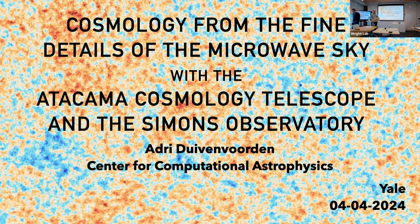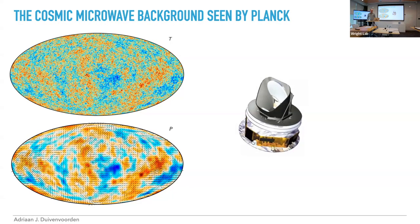I'll give an overview of what the Atacama Cosmology Telescope and the Simons Observatory are looking at, by starting with some context on the cosmic microwave background field. Here you see the data from the Planck satellite, which is really where most of our current knowledge about cosmology comes from, especially in the field of the CMB. This is the CMB observed by Planck — you can see all the temperature anisotropies. Planck also observed the polarization of the CMB, depicted here as vectors on top of a smooth version of the temperature map. This is really wonderful data, but of course we want to learn more.